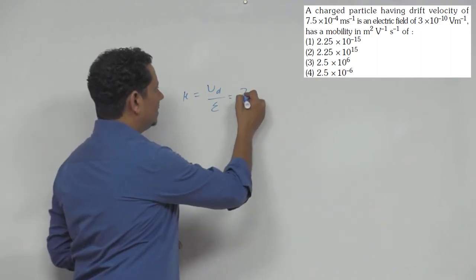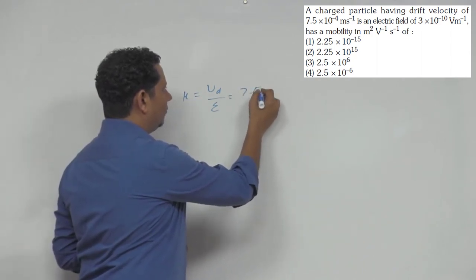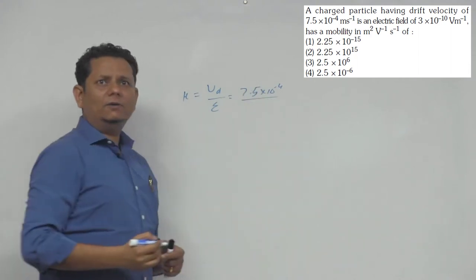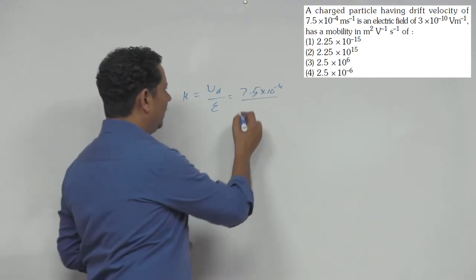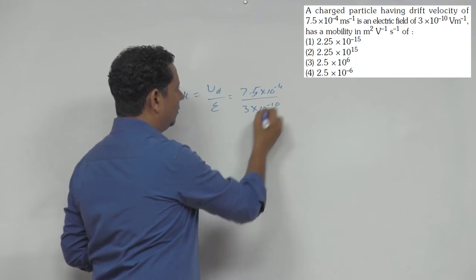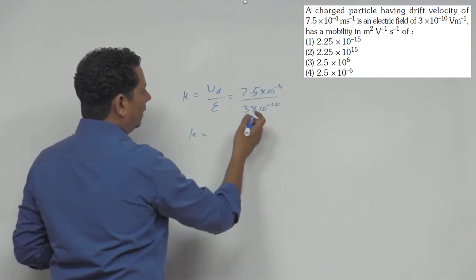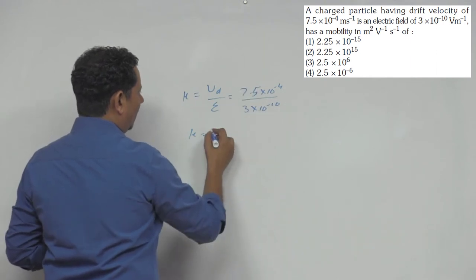This is 7.45 × 10^-4 divided by 3 × 10^-10. When we solve this, dividing these values, mu equals 2.5 multiplied by 10^6.